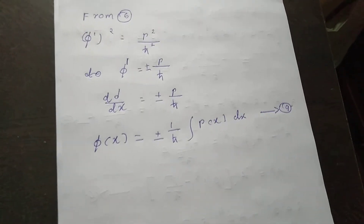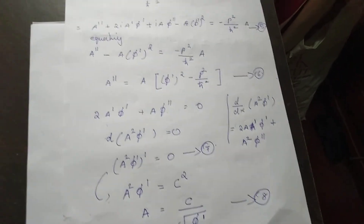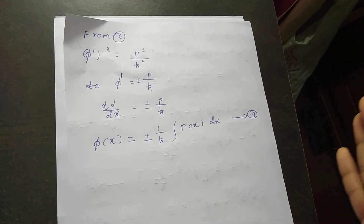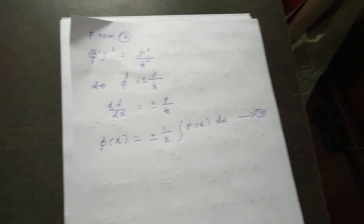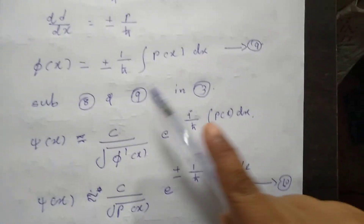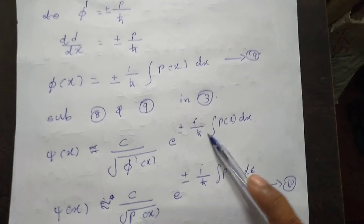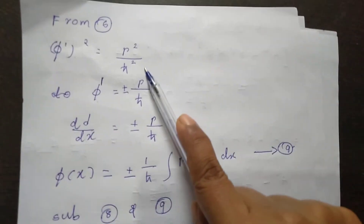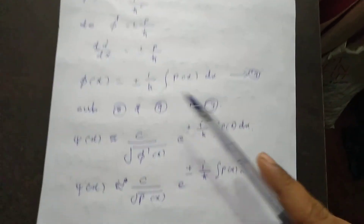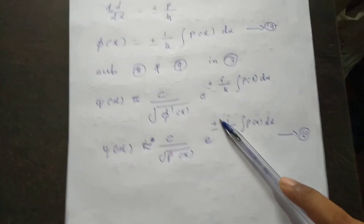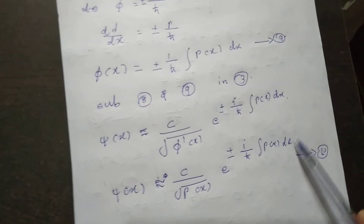Using the variable separable method on d phi by dx equals plus or minus p(x) by h-cut, we integrate to get phi(x) equals plus or minus (1/h-cut) times the integral of p(x) dx. This is equation number 9. Substituting equation number 9 for phi(x) and equation number 8 for A(x), we obtain the WKB wave function: psi(x) equals c divided by the square root of p(x), times exponential of plus or minus i by h-cut times the integral of p(x) dx.